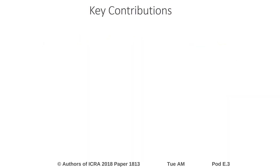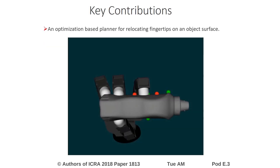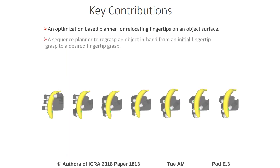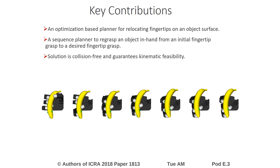To highlight our key contributions: we propose an optimization-based planner for relocating fingertips on an object's surface. We use this planner with our in-grasp manipulation planner to move an object from an initial fingertip grasp to a desired fingertip grasp. Our solution is collision-free and guarantees kinematic feasibility. Our method also works on arbitrary object meshes, as we decompose non-convex objects into convex regions.